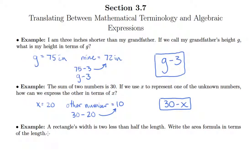One more: A rectangle's width is two less than half the length. Write the area formula in terms of length. We know that the area formula is length times width.